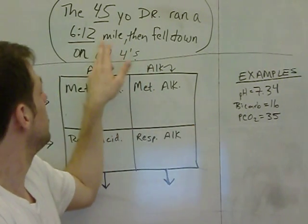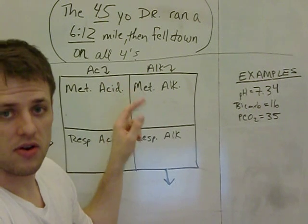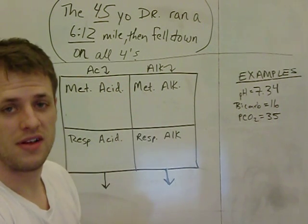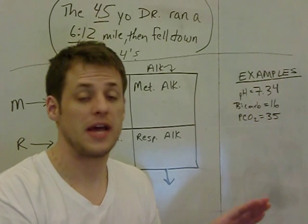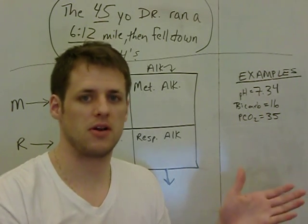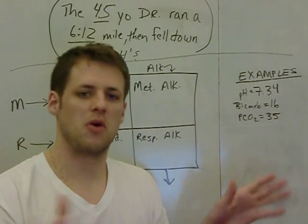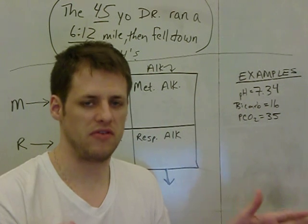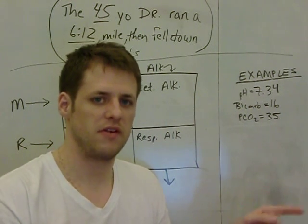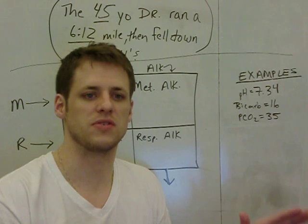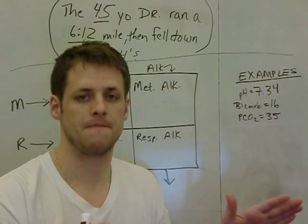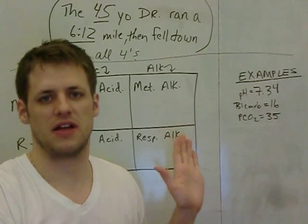First of all, you just need to remember the little saying I got up at the top here: the 45 year old doctor ran a 6:12 mile, then fell down on all fours. It sounds really stupid and you're like how come he's not 48, whatever. Just go over that phrase a few times: the 45 year old doctor ran a 6:12 mile and then fell down on all fours because he was so exhausted. You're gonna see what that means as I fill out this chart here.